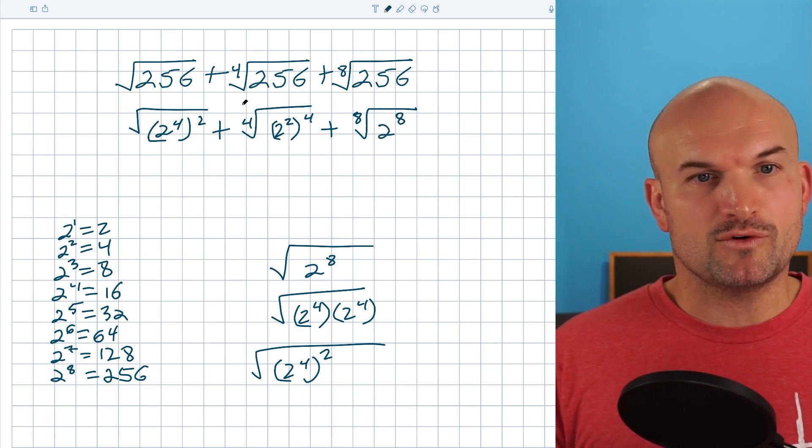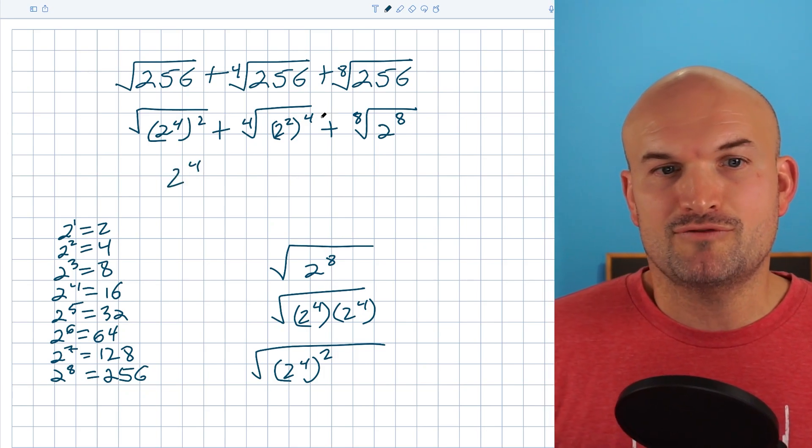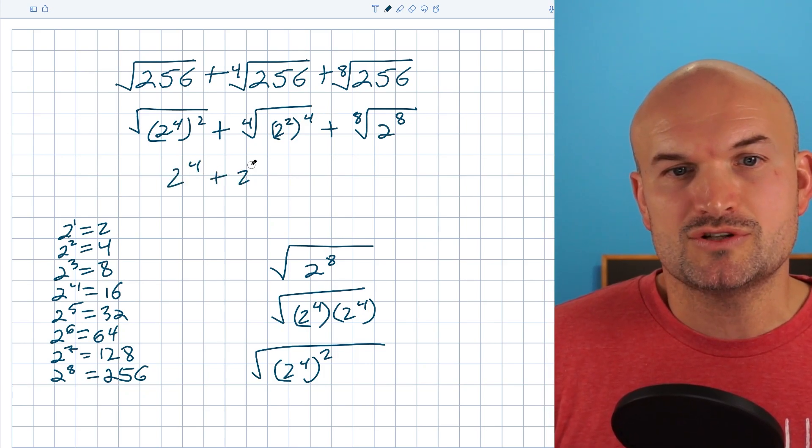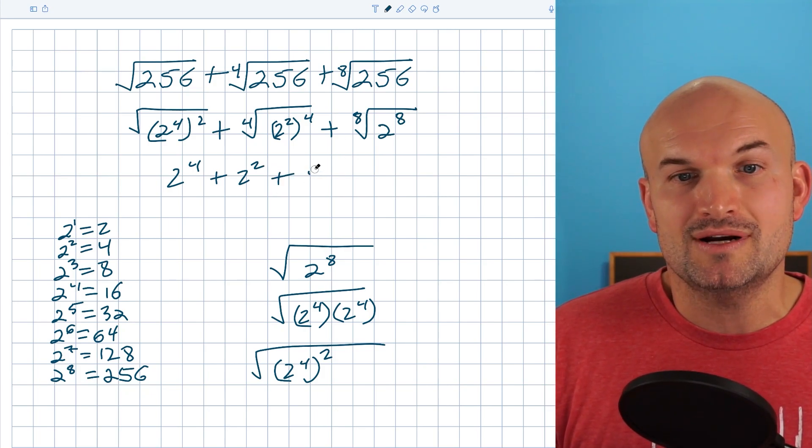So the reason why this is so important for what you can see here is the square root of something squared is just going to be a two to the fourth. The fourth root of something to the fourth power is just going to be a two squared. And the eighth root of something raised to the eighth power or two to the raised to the eighth power is just going to be two.